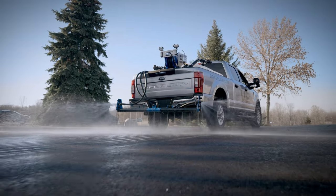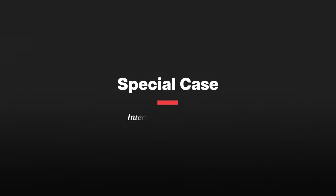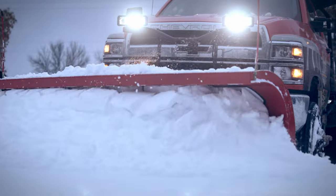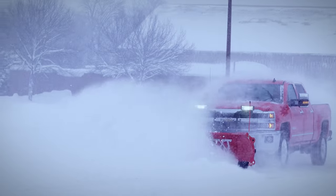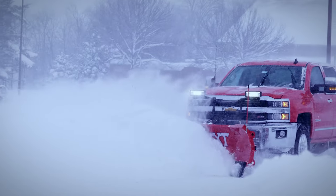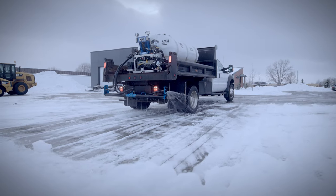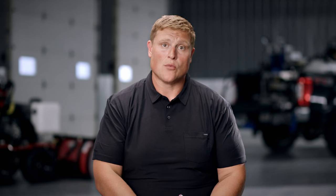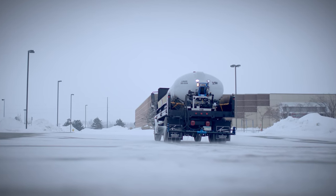We've covered standard application rates, but there are circumstances when we'll deviate from that. One of those is what we call inter-storm applications. A typical pre-treatment is going to last three to four scrapes over that lot with a blade before it becomes ineffective. If you get an extended snow event spanning multiple days, or a site that requires a lot of scrapes during a single day, you may want to reapply to help prevent that bond of the pavement. With liquids, it's always easier to prevent than to react — we're always going to use preventative measures instead of waiting and having to scrape it off later.